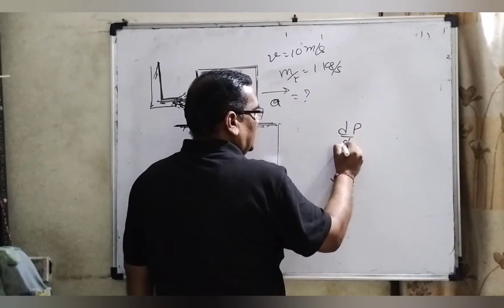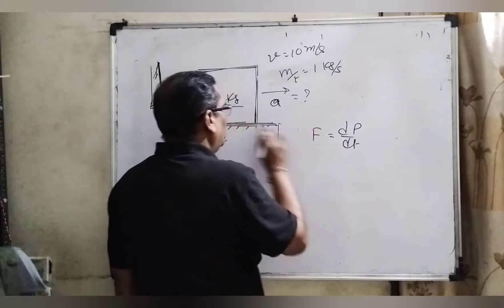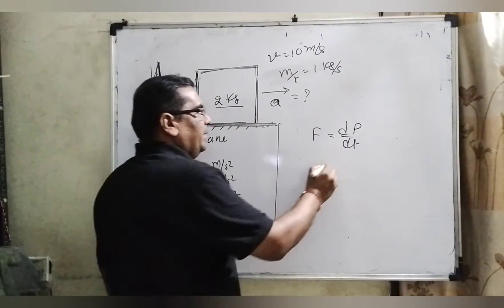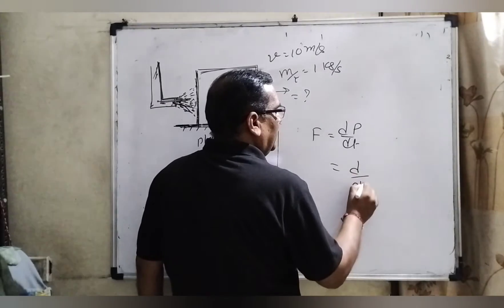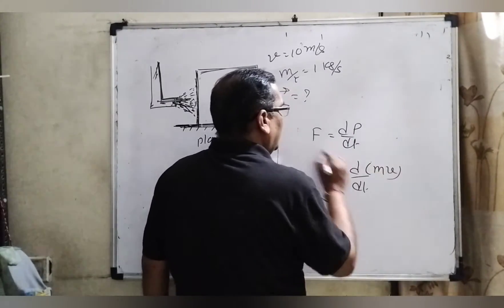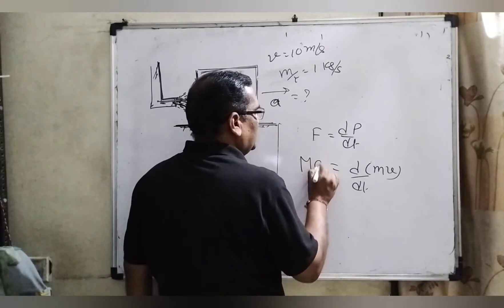The force is applied, and due to this force, this block will be accelerated. So here we know that dP/dt can be written as m into V, and force equals mass into acceleration.